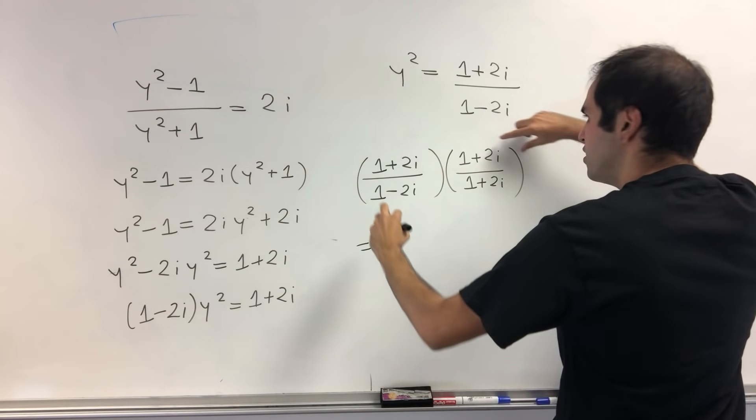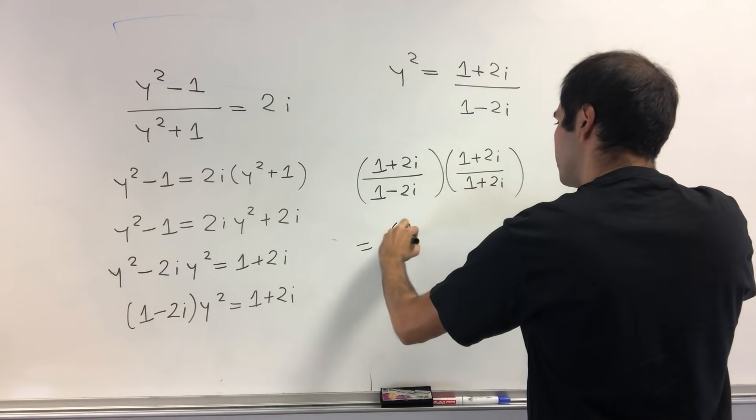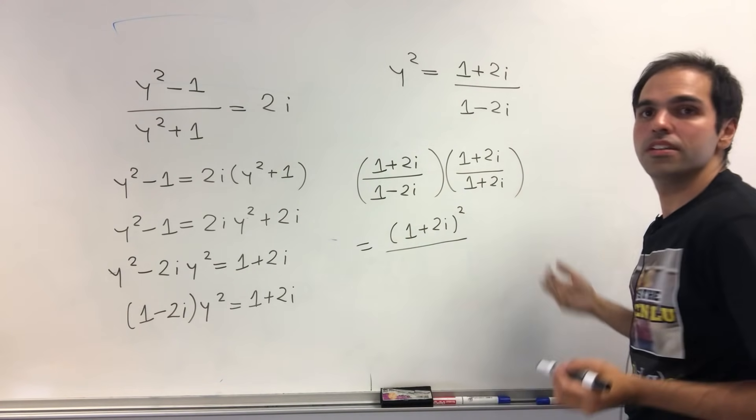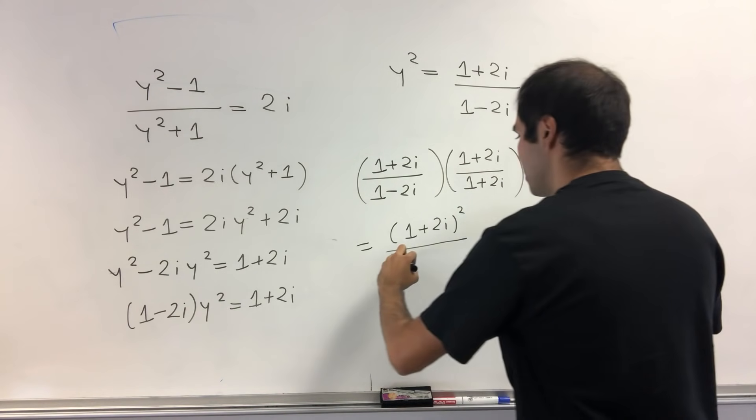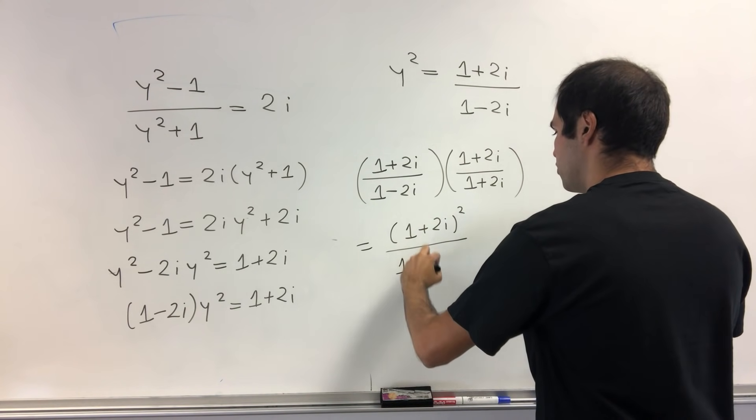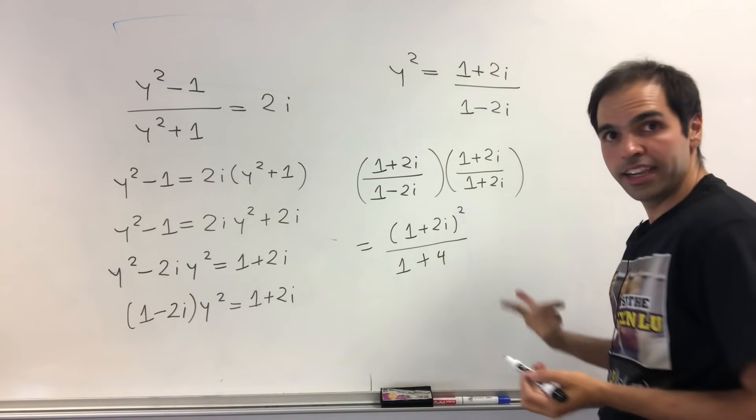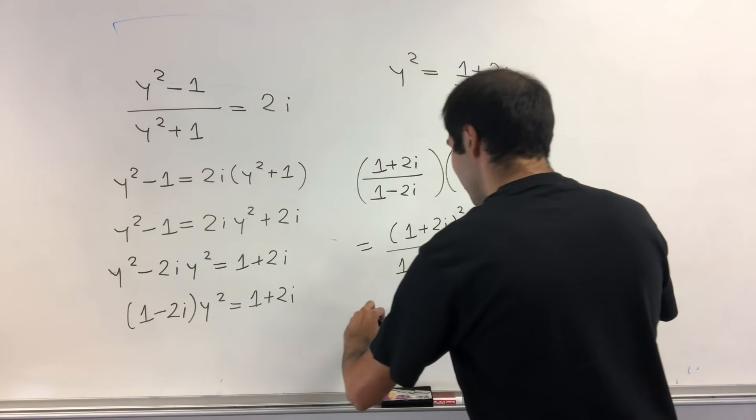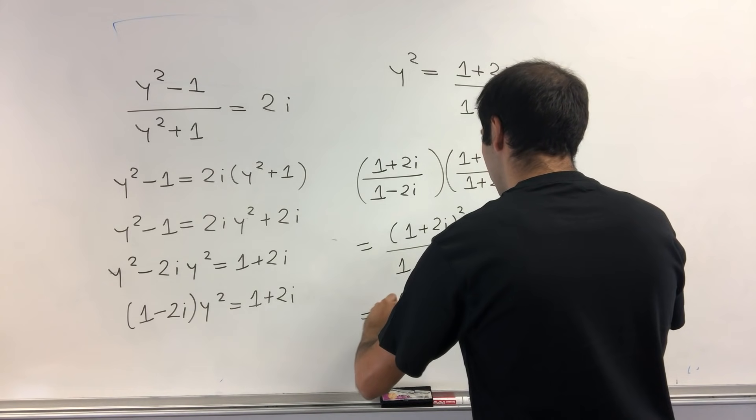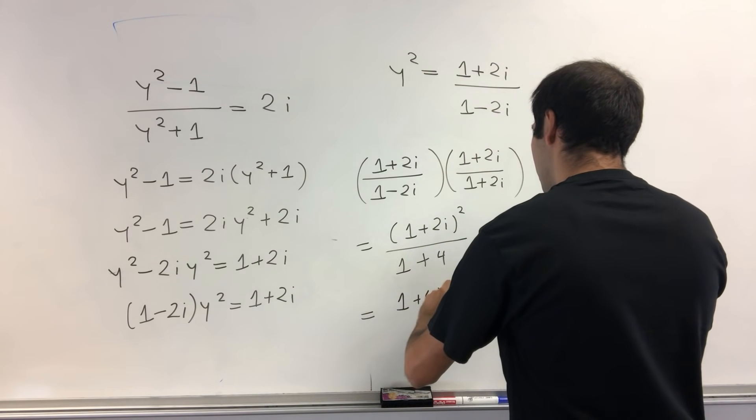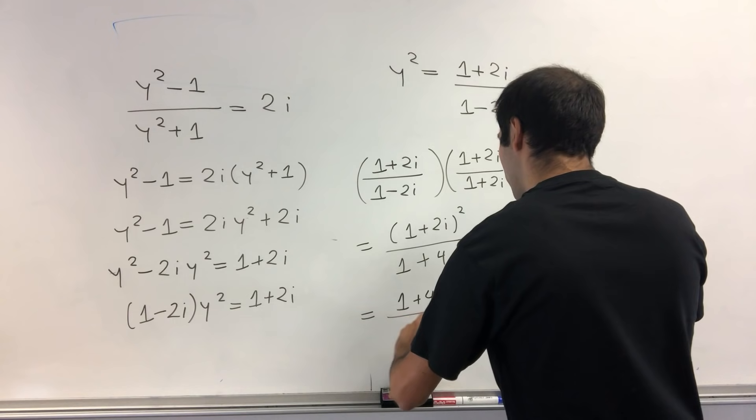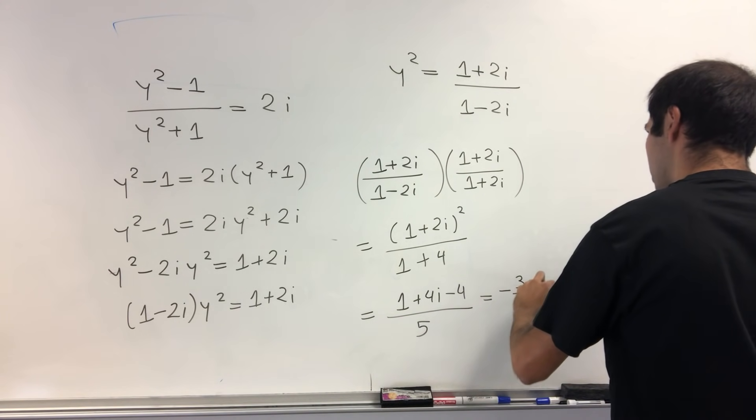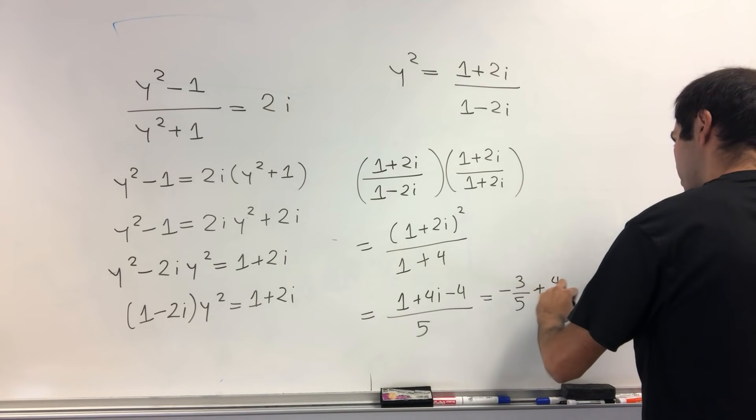And, well, this becomes a square. So this is 1 plus 2i squared. And the bottom is a squared minus b squared. So I think 1 plus 4, because, again, i squared is minus 1, times minus 1 becomes plus. And then this becomes 1 plus 4i minus 4 over 5. And so I think minus 3 fifths plus 4 fifths i.